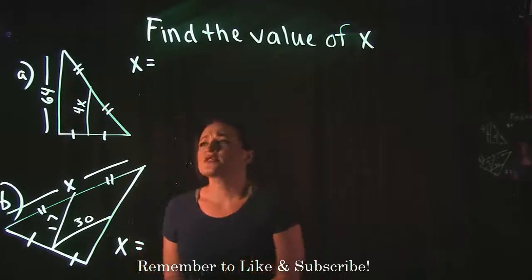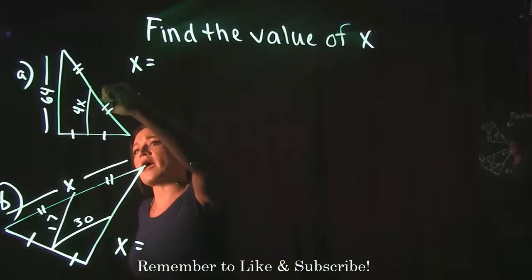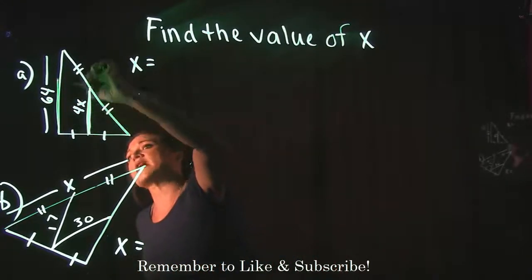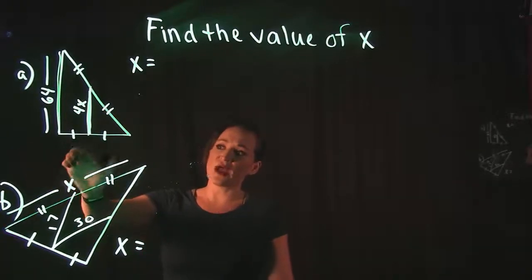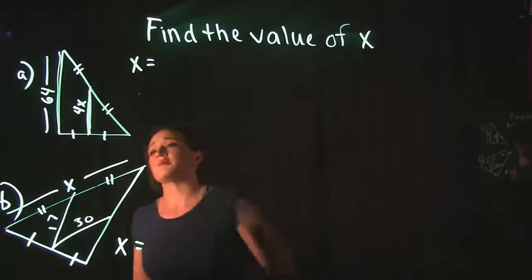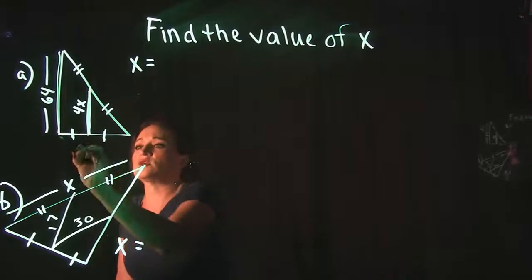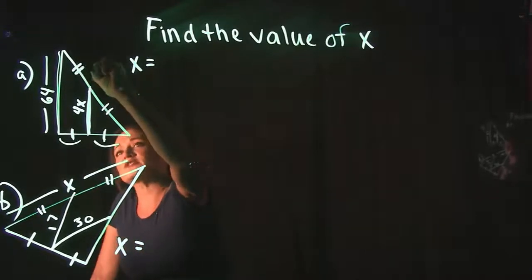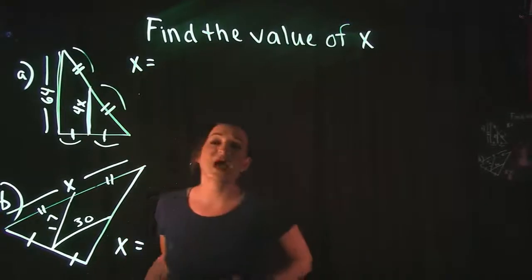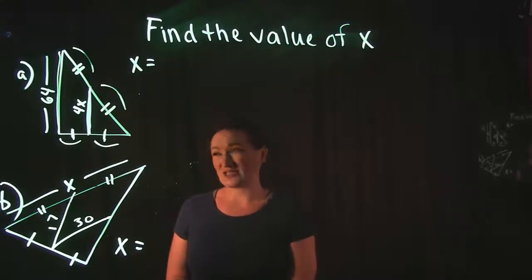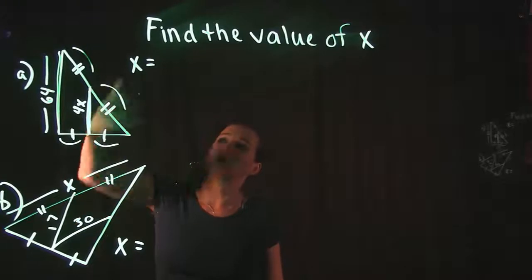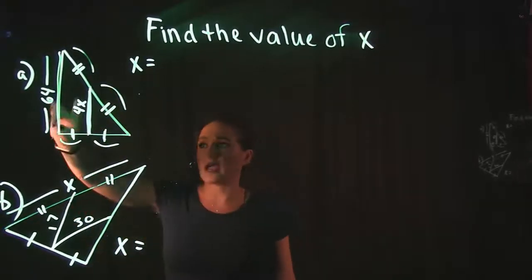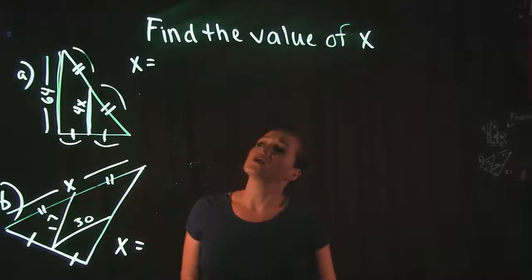Let's start with Example A. There are a couple of markings here. The 4x labels this line on the triangle, and the only other number given is that this long side is 64. Remember, when it comes to markings on triangles, tick marks indicate equal sides — two matching tick marks mean those sides are the same. So I have two pairs of equal sides, but I'm not solving for those sides. I need to find X for this interior line.